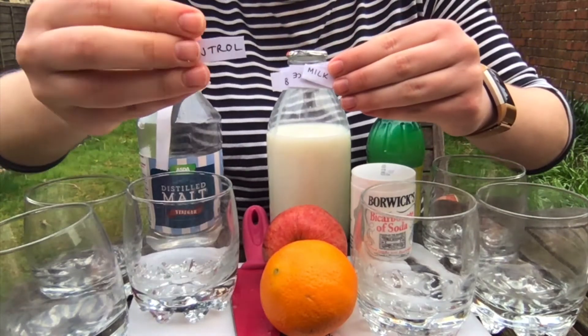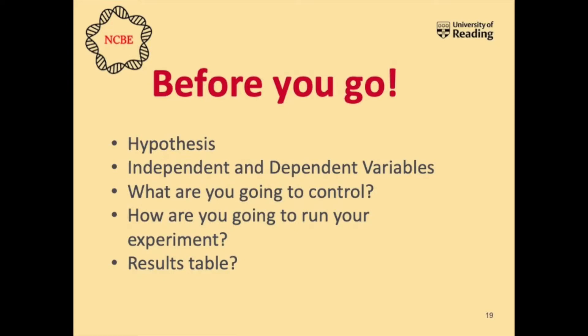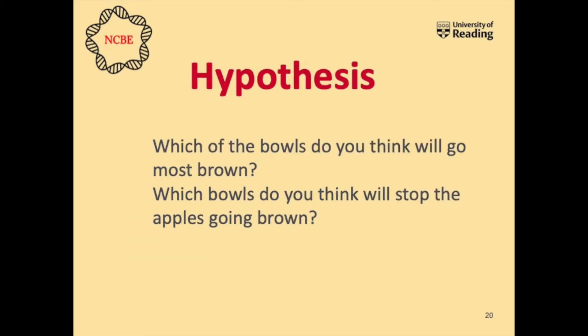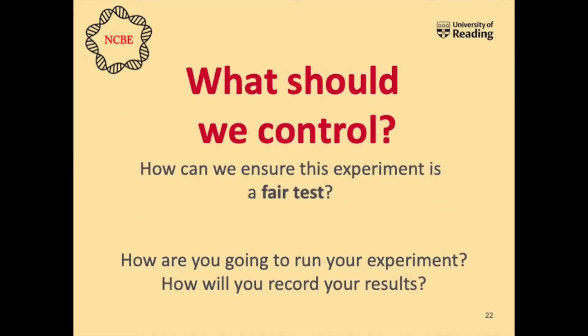Before we start, let's think about our independent and dependent variables and our hypothesis. First, your hypothesis: what do you think is going to happen during the experiment? Second, think about your independent variable — what we're going to change — and your dependent variable — the changes we are measuring. Finally, think about what you need to control in your experiment to ensure it is a fair test.